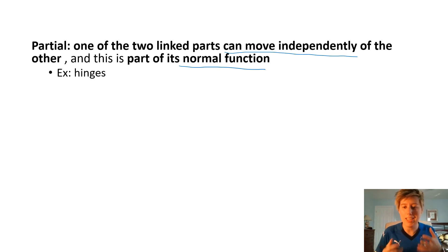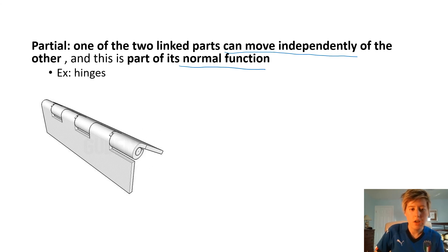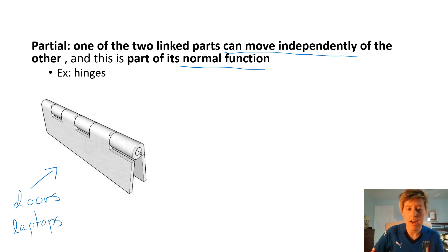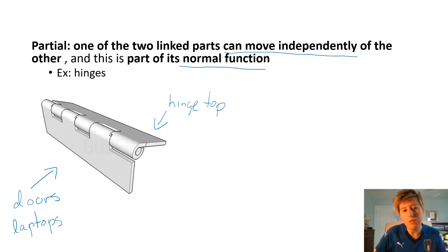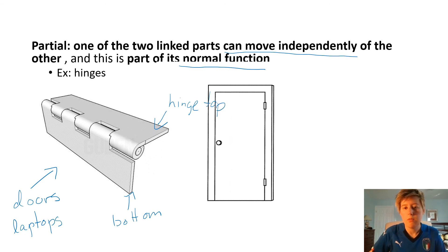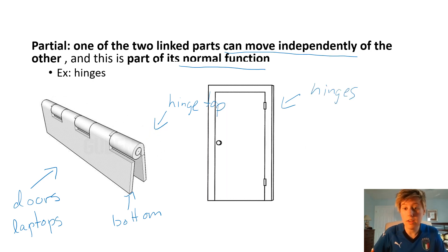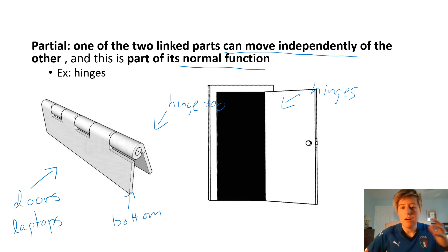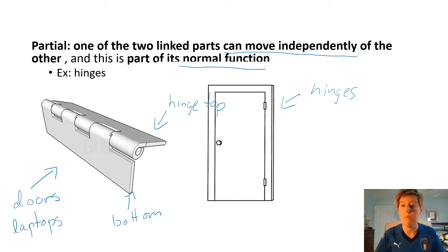In a partial link there is independent movement. One of the two parts can move independent of the other, and the key thing is that this movement is part of the function. An example would be anything with hinges — found on doors or on laptops — where the top part of the hinge moves independent of the bottom. A door can open and close because of its hinges, and that movement is allowed because of them. This is basically our summary of all the characteristics of a link. In the next video, we'll be analyzing links in a variety of different objects.